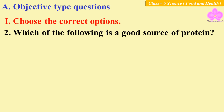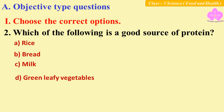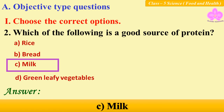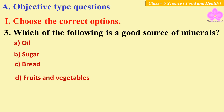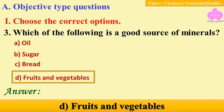Question two: which of the following is a good source of protein? Options: A: rice, B: bread, C: milk, D: green leafy vegetables. Answer: C, milk. Question three: which of the following is a good source of minerals? Options: A: oil, B: sugar, C: bread, D: fruits and vegetables. Answer: D, fruits and vegetables.